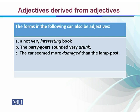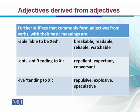'The party guests sounded very drunk' — here 'drunk' is used as an adjective, a past participle used as adjective. 'The car sustained more damage than the lamp post' — 'more than' is used with 'damage' to show it is an adjective derived from the verb 'damage.' Further suffixes that commonly form adjectives from verbs include -able, meaning 'able to be X-ed,' for example: breakable, readable, reliable, and watchable.